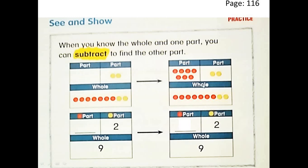So now, if we add these two parts, we will get the whole. But when we are missing one of these parts, we call that subtraction. We can subtract 2 from 9 to get the second part. So 9 minus 2 equals 7. The whole is 9, the first part is 2, the second part is 7.